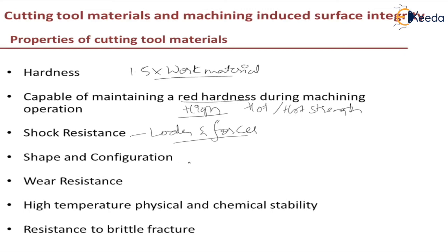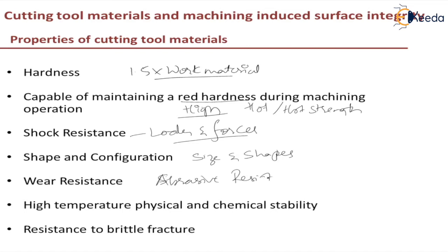Next, shape and configuration: the tool must be available for use in different sizes and shapes so that you can change it depending upon the cutting operation. Next, wear resistance — that is, the ability to maintain a sharp cutting edge throughout the cutting operation. This is the same as abrasive resistance; it should not wear off easily.